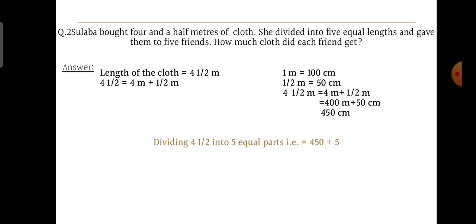Now let's do the second sum. Sulba bought four and a half meters of cloth. She divided it into five equal lengths and gave them to five friends. How much cloth did each friend get? Length of the cloth is four and a half meters, written as 4½ meters.